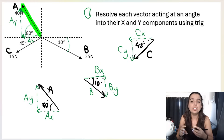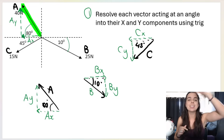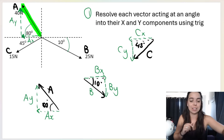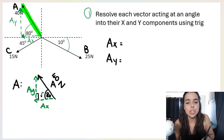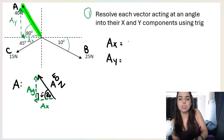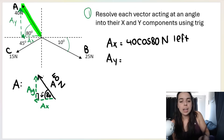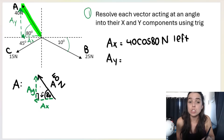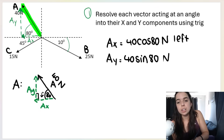It obviously doesn't help just to break them down into little triangles — I need to use trig alongside these triangles to work out what C-x, C-y, B-x, B-y are, and so on. We work out the components using trig. To work out A-x, I look at the angle given — 80 degrees. A-x is adjacent to my 80 degrees, and adjacent over hypotenuse is cosine. So A-x equals 40 cos 80 newtons, pointing to the left.